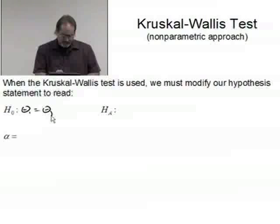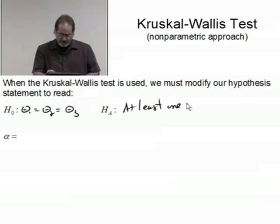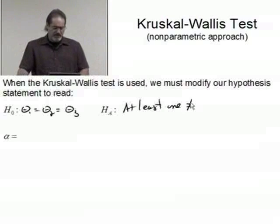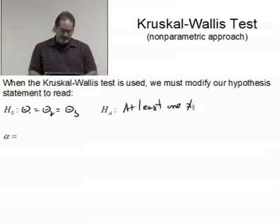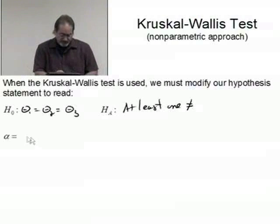I'll say theta from group one equals theta from group two equals theta from group three. And the alternative will be again at least one of these groups is not equal. Somebody's different from the rest, or it could be they're all three different, but at least one is different. Alpha, I'll stay with 0.05.